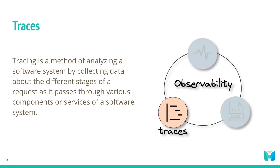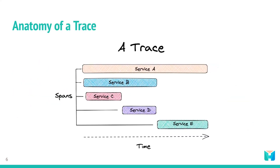The second type of data we look at is traces. Tracing is a method of analyzing a software system by collecting data about the different stages of a request as it passes through various components or services of the system. It involves creating a trace that includes information about each step of the request. A trace comprises one or more spans — a span represents a specific piece of work performed by a specific service within the request path, such as an HTTP request or a call to a database.